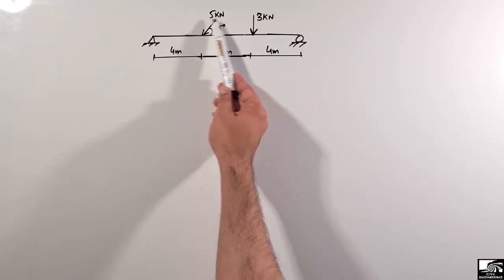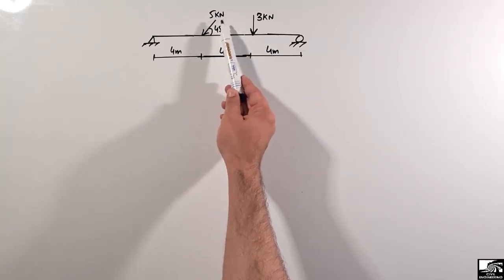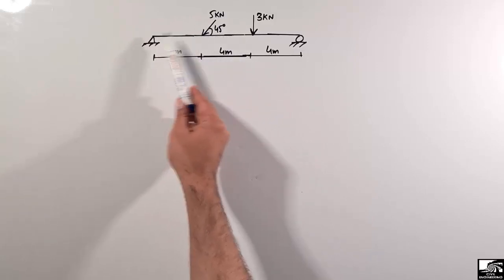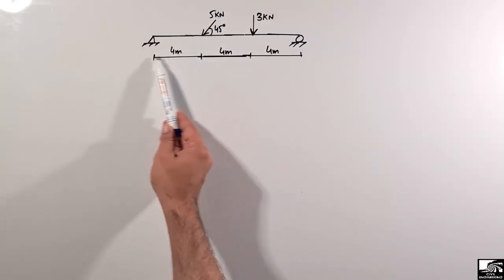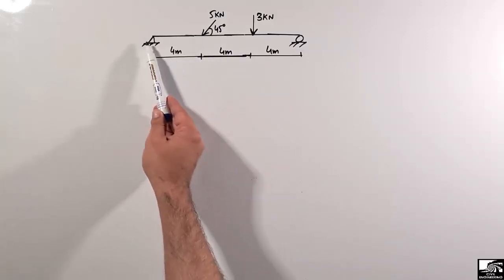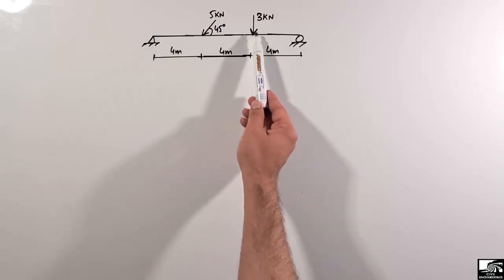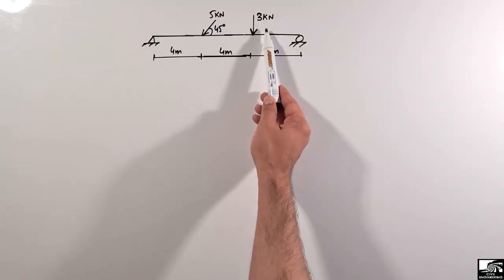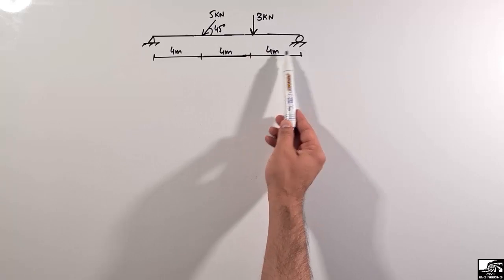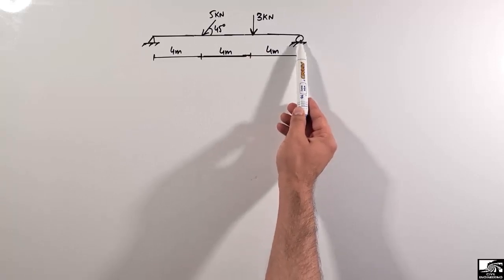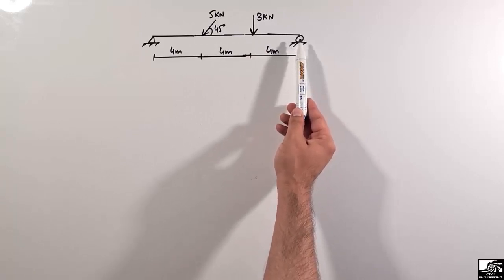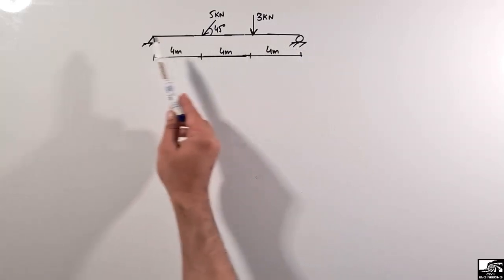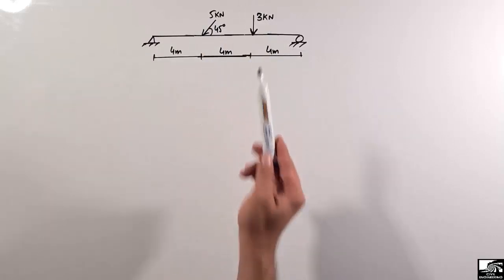One is an inclined load of 5 kilonewton acting at an angle of 45 degrees, located at a distance of 4 meters from the left support. There is also a concentrated load of 3 kilonewton acting 4 meters from the right support. We want to find the support reactions for this beam.